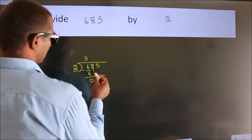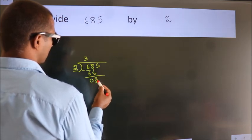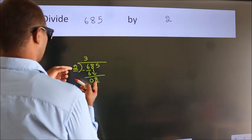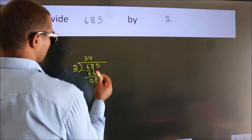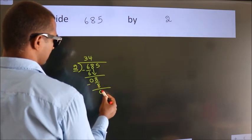After this, bring down the beside number. So 8 down. When do we get 8? In the 2 table, 2 fours is 8. Now we subtract. We get 0.